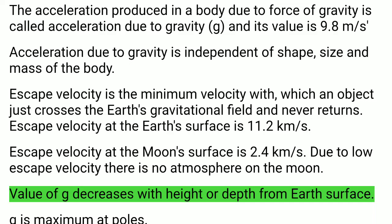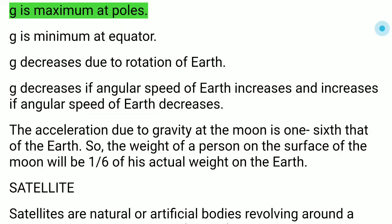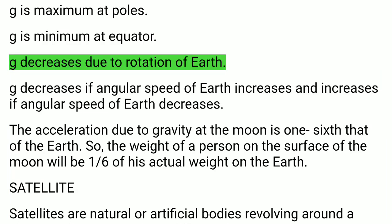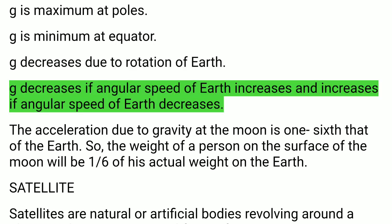Due to low escape velocity, there is no atmosphere on the moon. The value of g decreases with height or depth from Earth's surface. G is maximum at the poles and minimum at the equator. G decreases due to rotation of Earth. G decreases if angular speed of Earth increases, and increases if angular speed decreases.